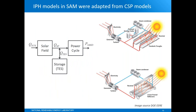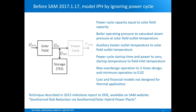The two new IPH models in SAM were adapted from the CSP models for parabolic troughs and linear Fresnel. This block diagram shows the CSP model components at a high level: the solar field that converts solar energy into thermal energy, the power cycle that converts thermal energy into electric energy, and an optional storage system available for the trough model.